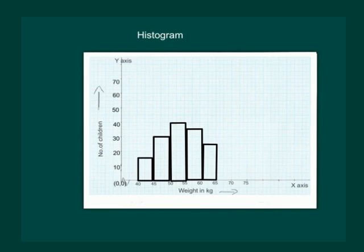Finally after marking for all the values we get this graph which is called a histogram. Here we can see that there are no gaps between bars because there were no gaps between the intervals in our data.